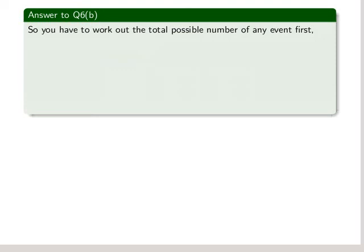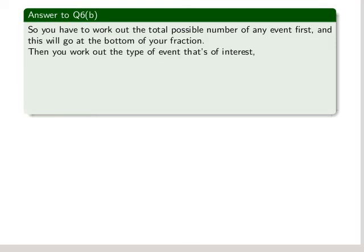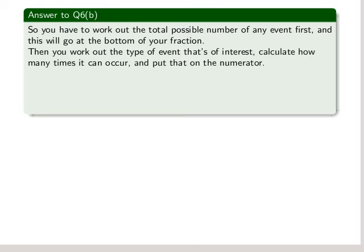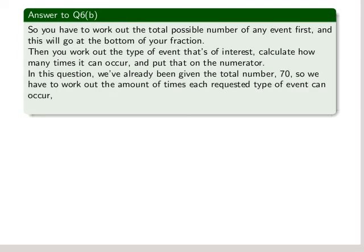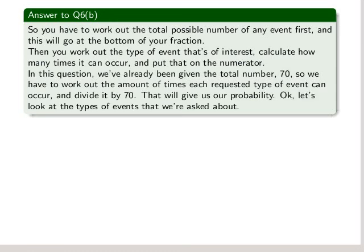So you have to work out the total possible number of any event first, and this will go at the bottom of your fraction. Then you work out the type of event that's of interest and calculate how many times it can occur and put that on the numerator. In this question, we've already been given the total number, 70. So we have to work out the amount of times each requested type of event can occur and divide it by 70. And that will give us our probability.